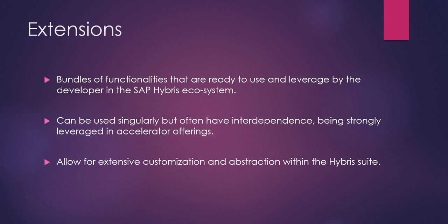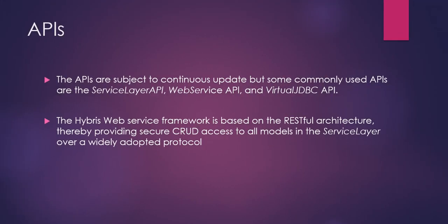A further layer of abstraction from the SAP Hybris core code is that of APIs. Commonly used APIs include the Service Layer API, Web Service API, and Virtual JDBC API. The Hybris web service framework is based on RESTful architecture, thereby providing secure CRUD access to all models in the service layer over a widely adopted protocol. As an example of API use, a mobile app consuming JSON from Hybris would be presented via the RESTful architecture.